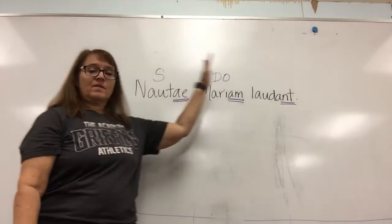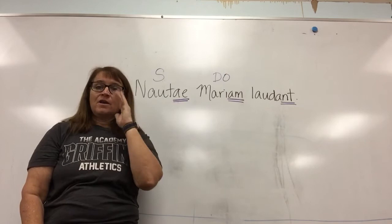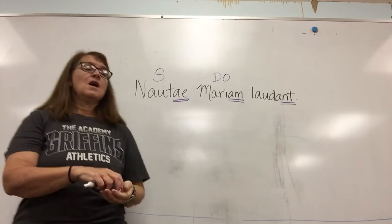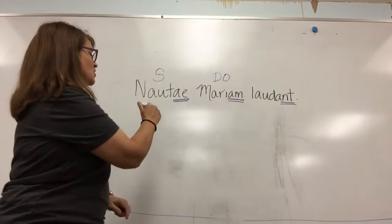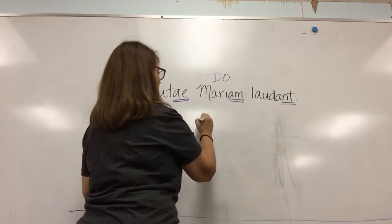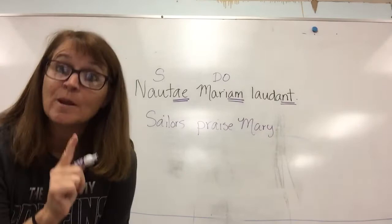I always look at the verb first: the verb ends in -nt — that's plural — so I'm looking for a plural subject. The subject is going to be in the nominative case. Which of these two are in the nominative case? That's right — the sailors. Nautae, with an -ae ending, is nominative plural — so that's the subject. And then the -am ending is accusative case, and the job of the accusative case is the direct object. So even though words may be in different orders, when you translate into English: the sailors praise Mary.